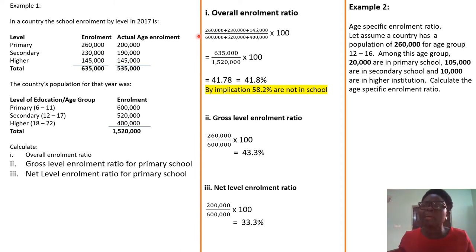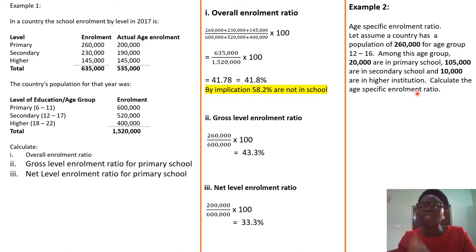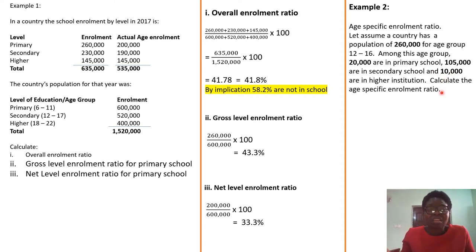Let's look at another example: how to determine the age-specific ratio. Assume a country has a population of 260,000 for age group 12 to 16. Out of these 260,000, 20,000 are in primary school, 105,000 are in secondary school, and 10,000 are in higher institution. Age group 12 to 16 are normally supposed to be in secondary school, but some are in primary school and some are already in higher institution — as we sometimes find 15-year-olds entering university.